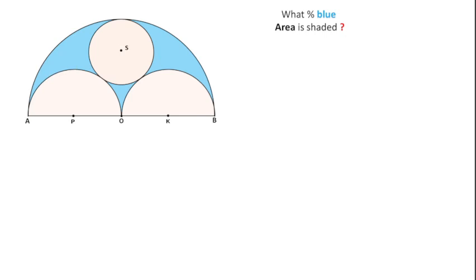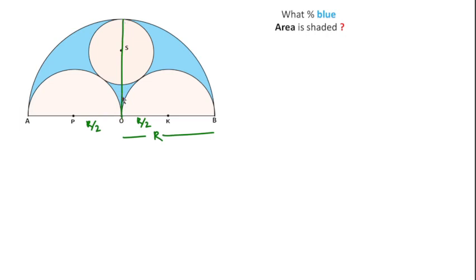To find this, I will consider the radius of this bigger semicircle is R. So the radius for each of the two smaller semicircles will be R over 2, and this is also the radius for the bigger semicircle, which is perpendicular on AB. Let's suppose the radius for this circle is small r.